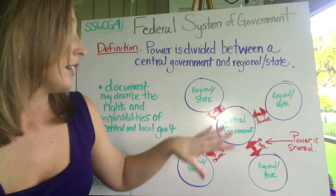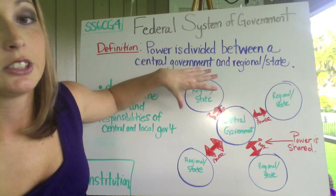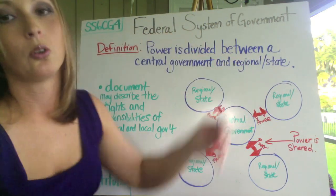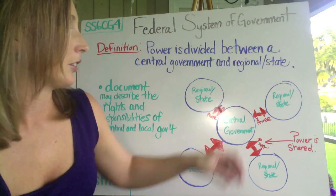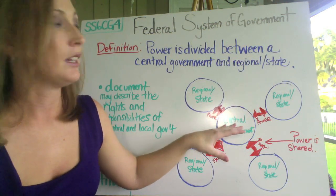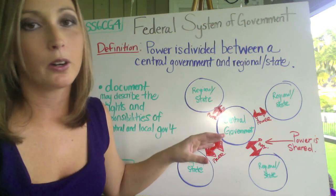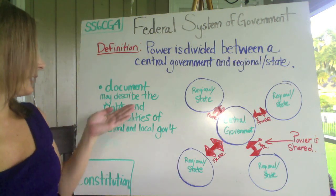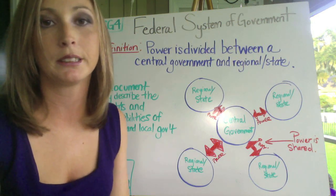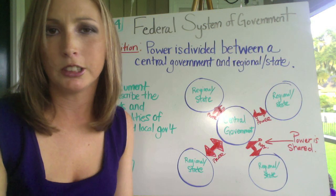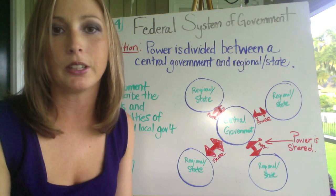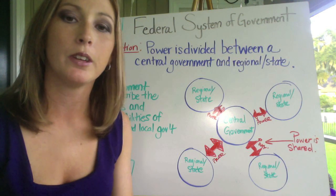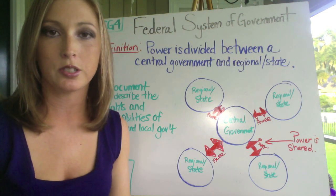In a confederate system, such as the United Nations — an example we talked about — the regional states would have a much larger circle and the central government would be the weaker center. The power in a federal system goes both ways. The national government's power is typically outlined through a document that describes the rights and responsibilities of central and local government. In the United States, that document is the Constitution — which should be a review from last year.